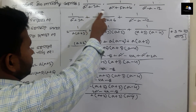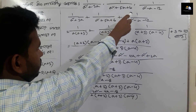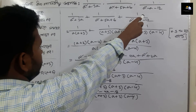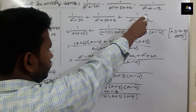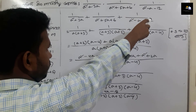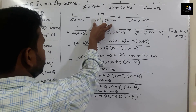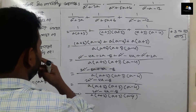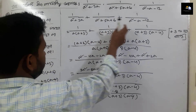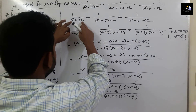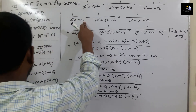Let's see the next video. The expressions are: 1 by a square plus 3, 1 by a square plus 5a plus 6, 1 by a square minus 12. We have to notice that a square plus 3 is one of the expressions.